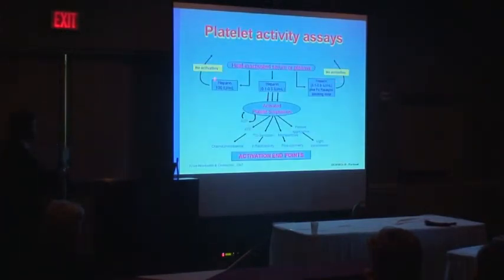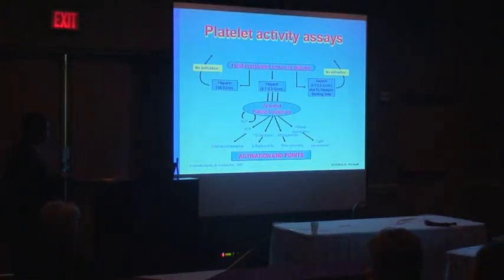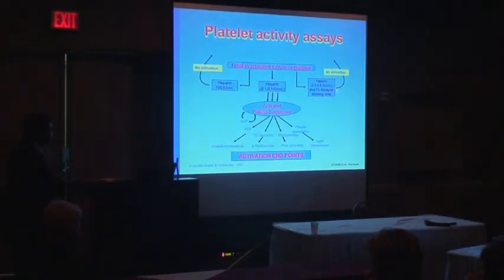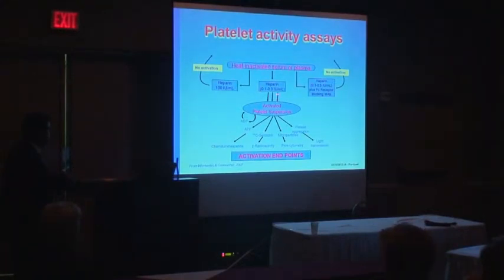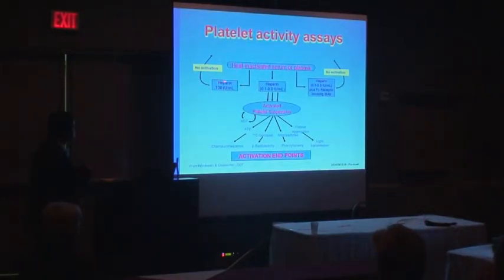Concerning platelet activity assays, they are summarized on this slide. The best approach is to use heat-inactivated serum or plasma from the test patient, tested with washed platelets in the presence of low or high heparin concentration, or in the presence of a monoclonal antibody that blocks FC-gamma-R2 activity. If heparin-dependent antibodies capable of activating platelets are present, platelets will be activated at low heparin concentration but not at high heparin concentration, confirming the heparin-dependent antibody specificity.